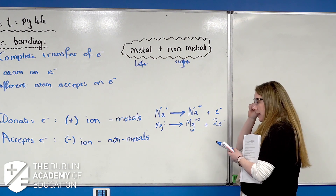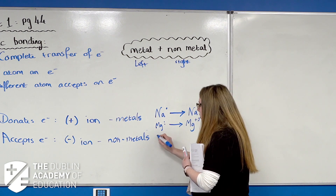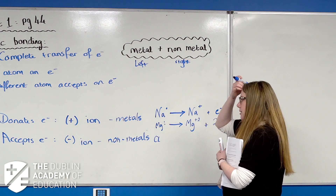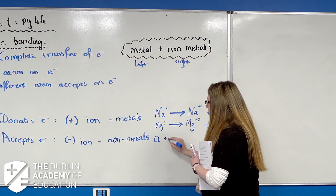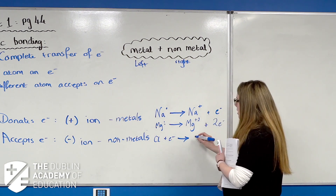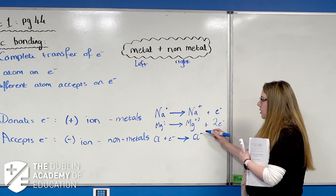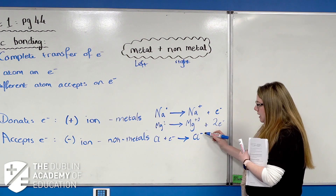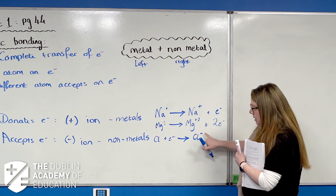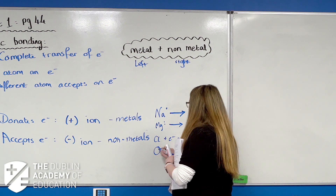For non-metals accepting electrons: chlorine has seven electrons in its outer energy level. It will take one more in order to get a stable octet and form Cl⁻. That minus one tells us it has accepted one electron.